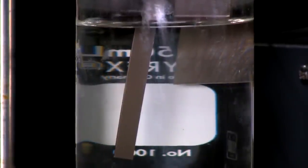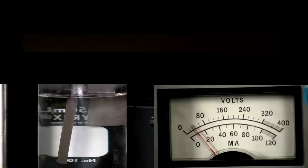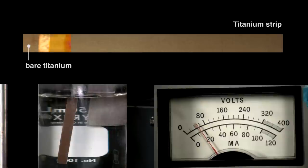We see bubbles coming off the electrodes. As I increase the voltage, the color of the titanium changes. We call this process anodizing.